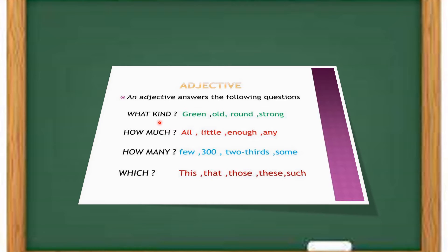The examples of what kind could be green, old, round, strong. The examples of how much could be all, little, enough, any.